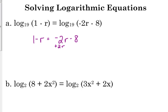So I'm going to start by adding 2r to both sides. That gives me 1 plus r is equal to negative 8. Subtract 1. r is equal to negative 9.